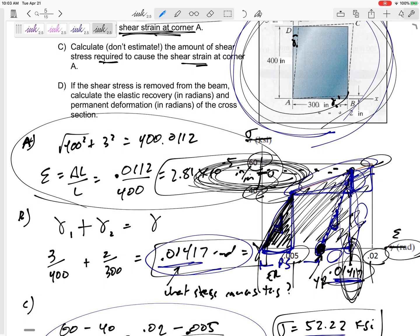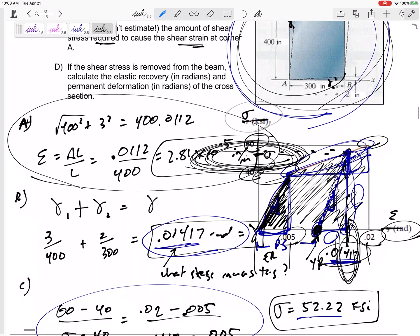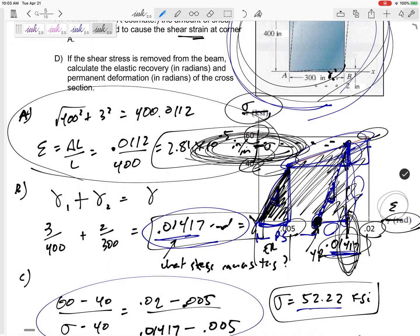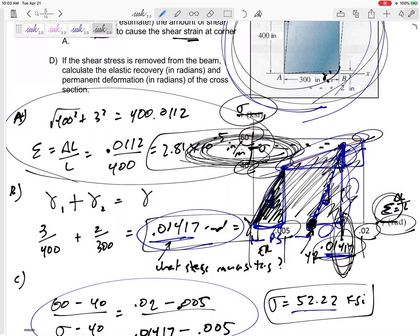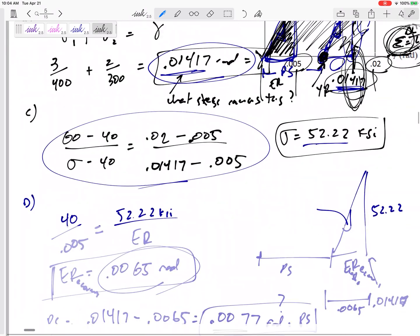Another thing to caution you about for normal problems: remember that this axis right here is strain. This axis right here is unitless, this axis right here is delta L over L. So be careful if in a normal problem I'm asking for the final length, you know, the permanent deformation in length. You might have to take your strain and multiply it times L.